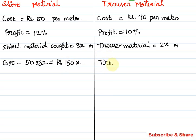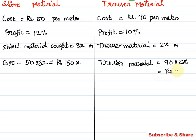The total cost of trouser material is 90 rupees per meter. Trouser material is 2x meters, so the cost is 90 into 2x. 9 times 2 is 18, so the total cost of trouser material is 180x rupees.